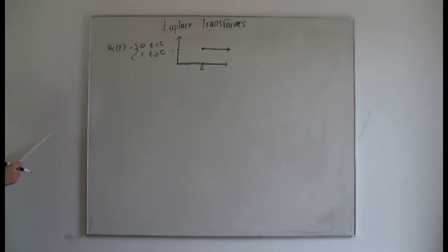So now we'll learn how to take the Laplace transform of the unit step function. The unit step function is usually written as u with a subscript of c of t. And this means that it is the step function.